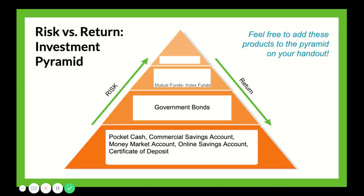At the third level of the pyramid, we have mutual funds, corporate bonds, and even stocks — all ways of buying small pieces of companies. You have the chance of a much better return by buying a small piece of a company, but if the company doesn't do well, you also have a lot of risk of losing your money. If the company goes out of business, you could lose your money entirely.